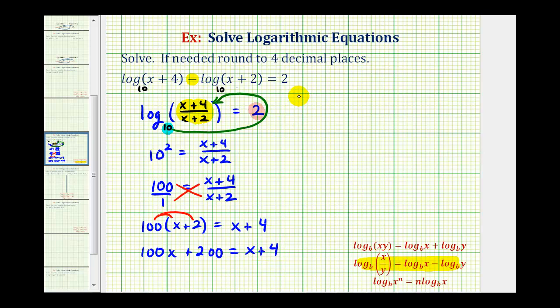Let's go ahead and continue this over here on the right. To solve for x, we need x on one side of the equation, so let's subtract x on both sides. We have 99x plus 200 equals four. Subtract 200 on both sides.